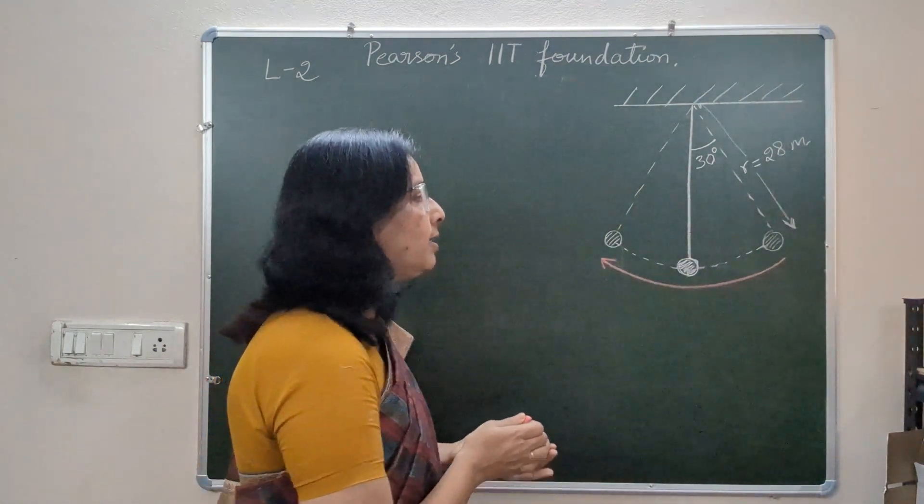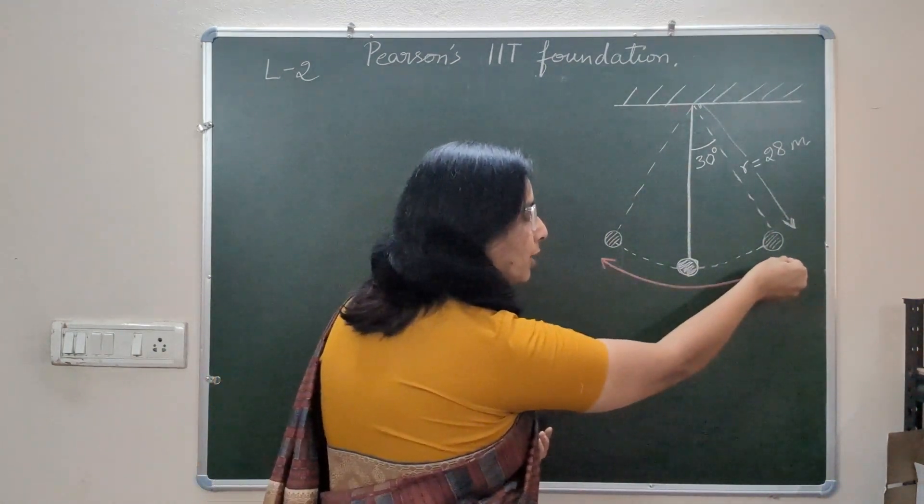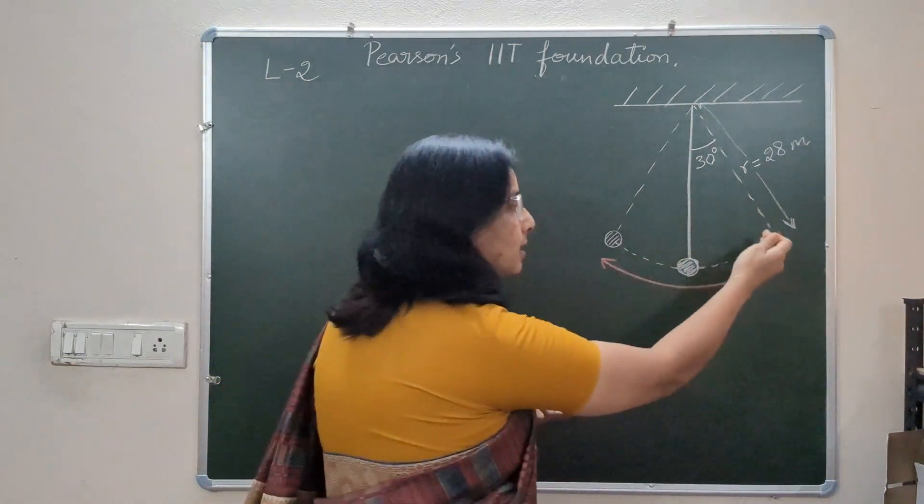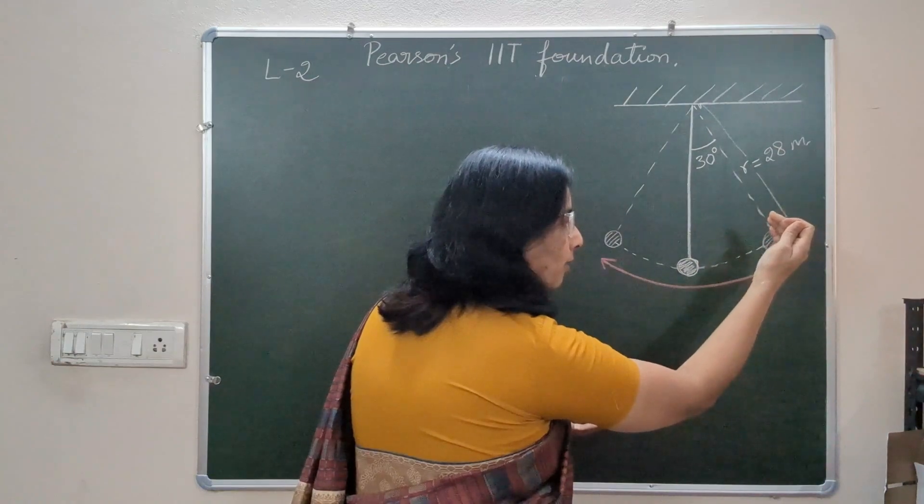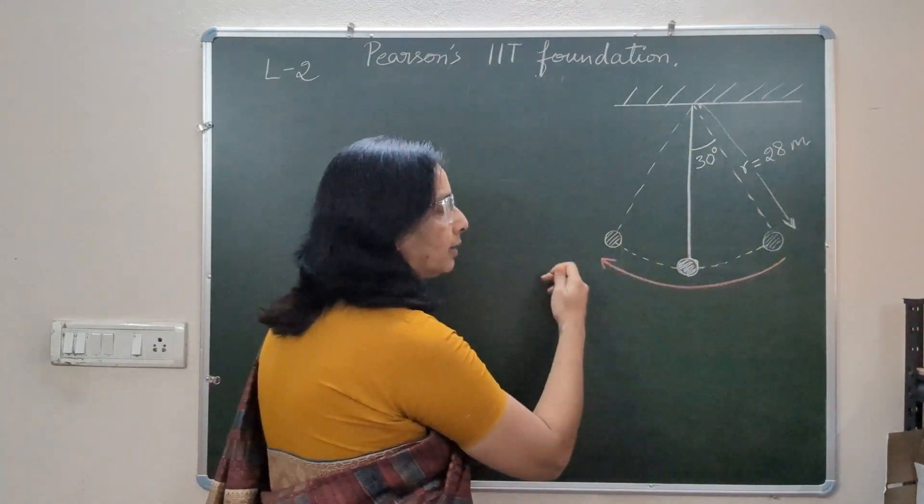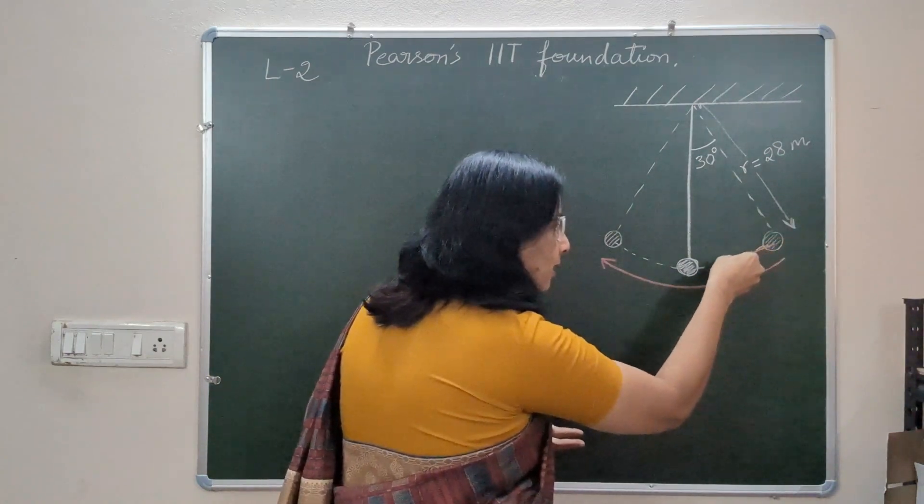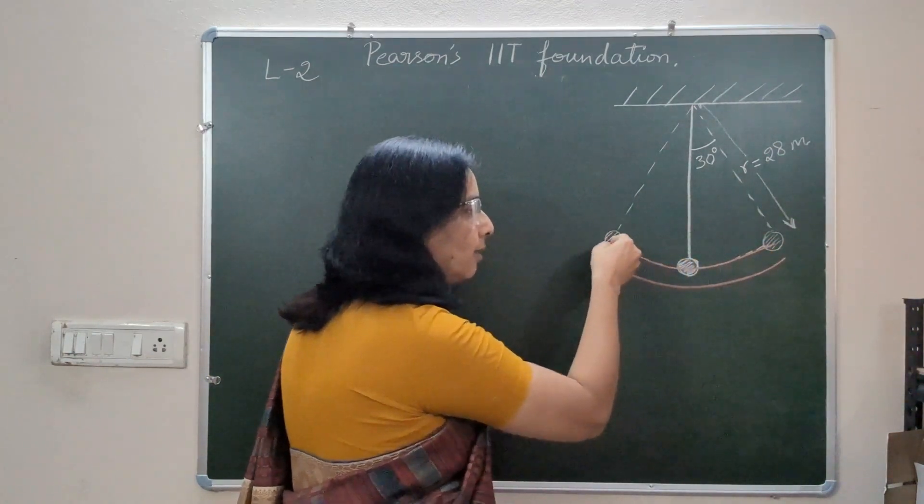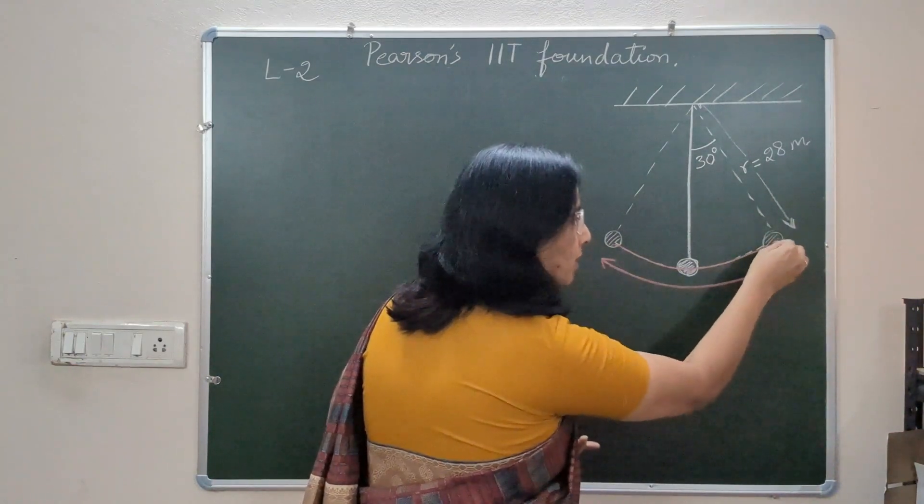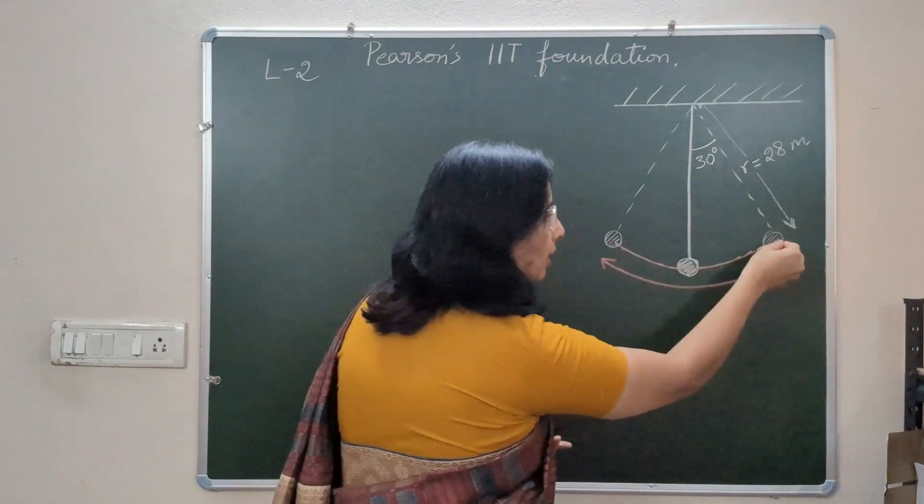We are supposed to find the ratio of distance travelled by the pendulum to displacement when this pendulum moves from one extreme position to another. That means we have to find this distance and then displacement, which is the shortest distance between initial point and final point.